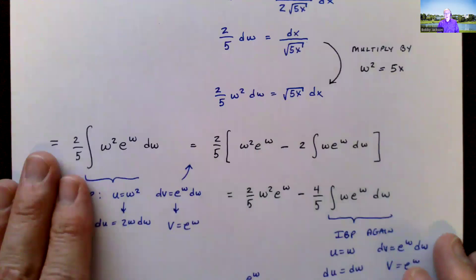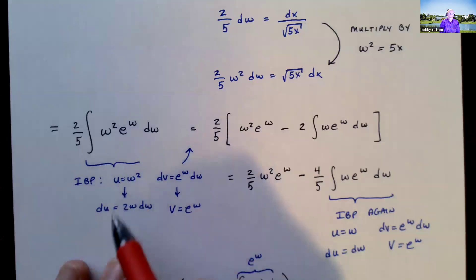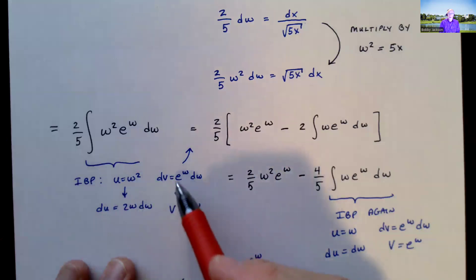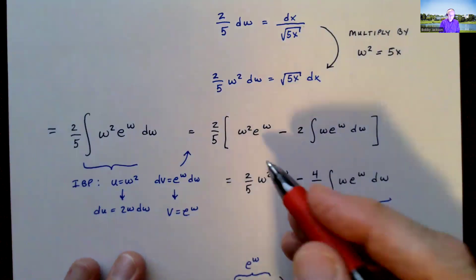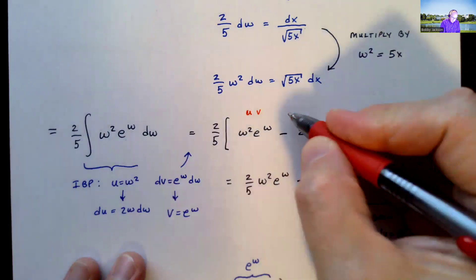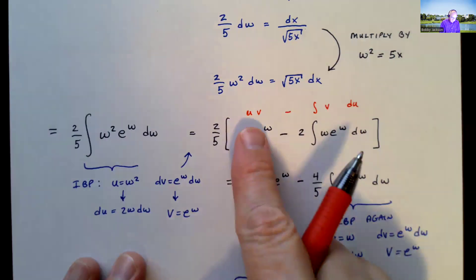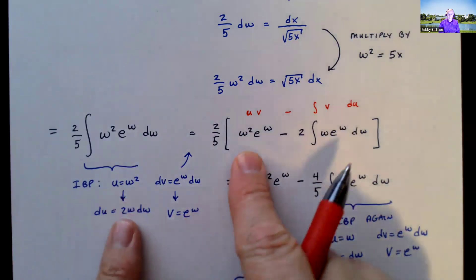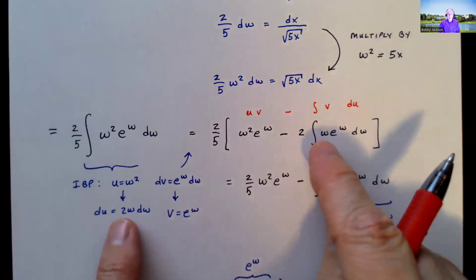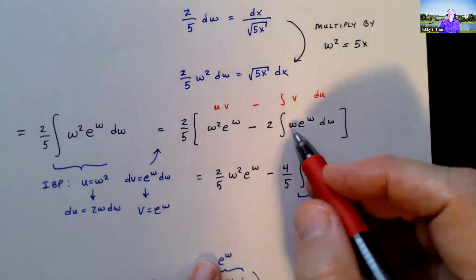Now we have to use integration by parts. Let u equal w squared, so du equals 2w dw. For dv, we have e to the w dw, and integrating that gives v equals e to the w. Remember, integration by parts says the integral of u dv equals uv minus the integral of v du. So u times v gives w squared times e to the w, minus the integral of v du, which is 2w e to the w.